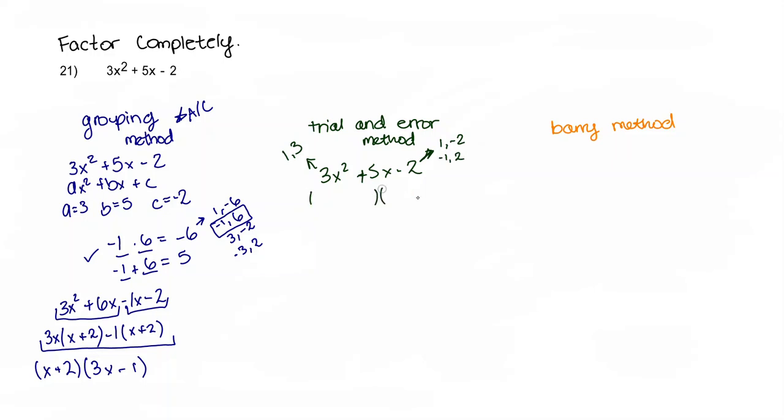So if a trinomial can be factored, it will always factor into two binomials. So I'm going to write my two bubbles there. And I'm going to start off with 1x here and 3x here. And then I'm going to start off by plugging in 1 and negative 2. So positive 1 and negative 2.